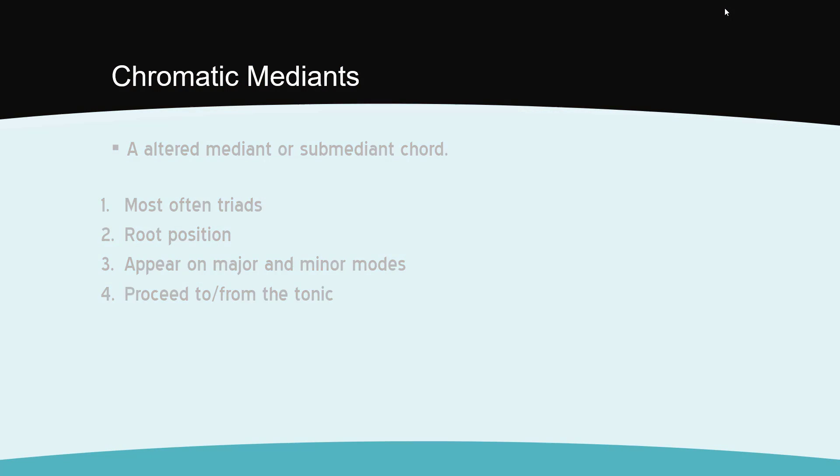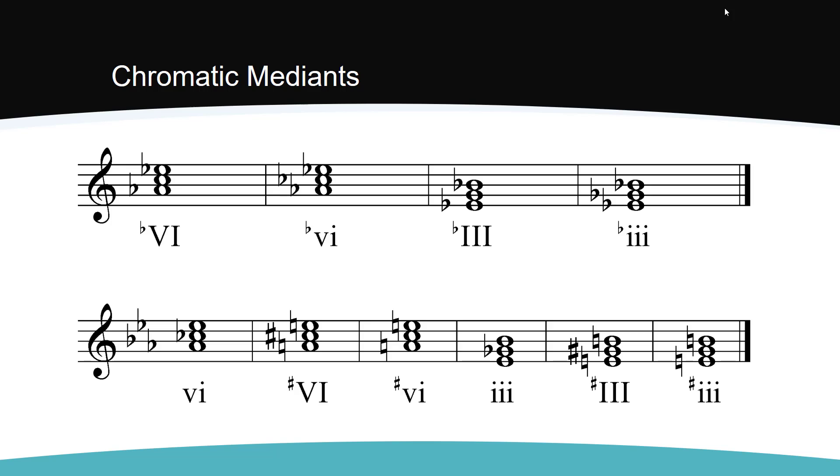In major, the following chromatic mediants are possible. A major 6 chord built on the lowered 6th scale degree. A minor 6 chord built on the lowered 6th scale degree. A major 3 chord built on the lowered 3rd scale degree. Or a minor 3 chord built on the lowered 3rd scale degree.